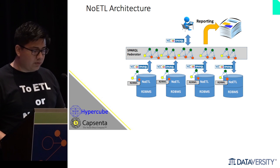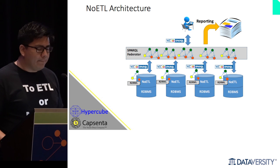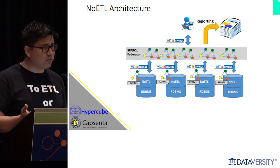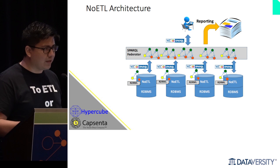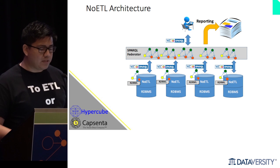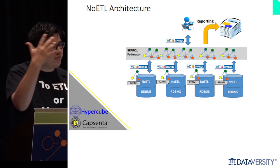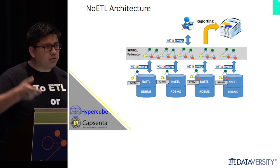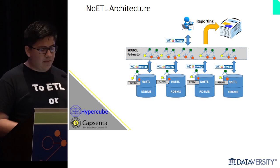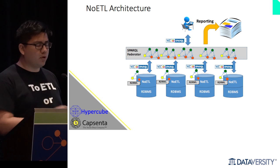In the no-ETL approach, your data stays where it is but you can still access and query it in terms of the target EKG. You take a SPARQL query expressed in terms of FIBO, and internally the system translates that using the mapping to SQL queries down to the database. You get your results back thinking you're querying everything in terms of the target, but your data didn't have to move.